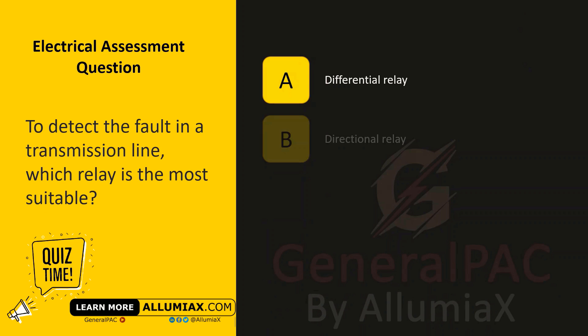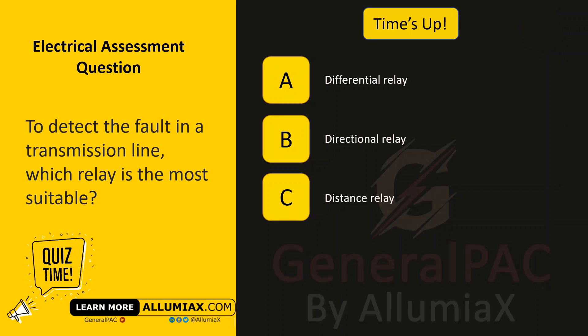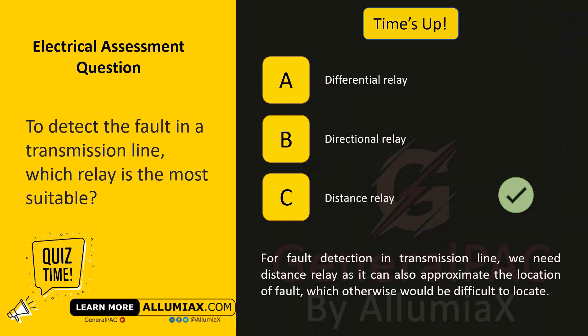To detect a fault in a transmission line, which relay is the most suitable? A: differential relay, B: directional relay, C: distance relay. The answer is C — distance relay. For fault detection in a transmission line we need a distance relay, as it can also approximate the location of the fault, which otherwise would be difficult to locate.